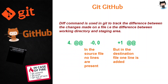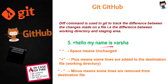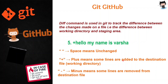After this, you see numbers like -0 and +1. The -0 means that in the source file (staging area), there are no lines present. Whereas +1 means in the destination file (working directory), there is one line added — and that line is 'Hello, my name is Varsha.' The plus sign before the line means lines are added to the destination or working directory. If there is a minus before a line, it means lines are removed from the destination. And if there is just a space, that means those files are unchanged — no lines added and no lines removed.